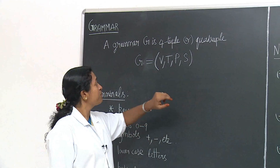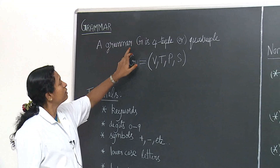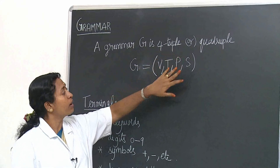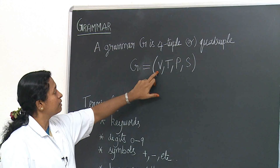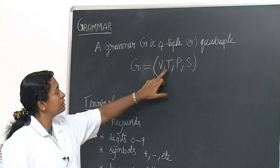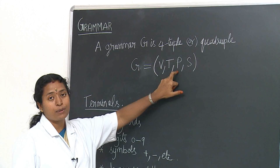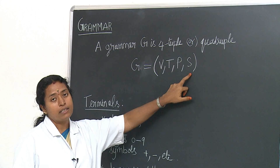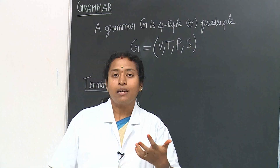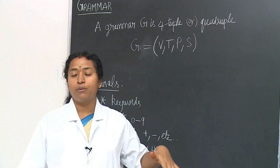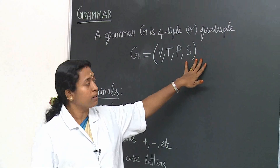Context with grammar. First we see what is the grammar. The grammar G is a 4-tuple, meaning it will have 4 things: V is the terminal, T stands for non-terminal, P stands for productions, and S stands for start symbol. For any language you must be able to know the grammar. Before getting into the language, we should know the grammar.